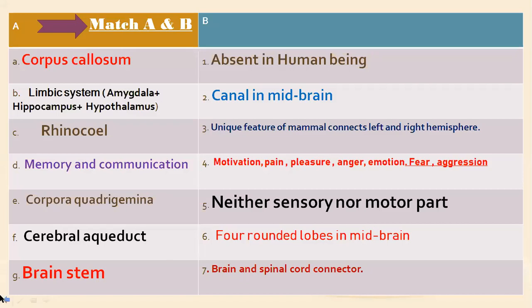Now for the answers: the brain stem is the structure that connects the brain and spinal cord — mainly the midbrain and hindbrain form the junction connecting the spinal cord. The rhinocoel, present in rabbits, is the cavity of the olfactory lobe — olfaction means smelling — and is called the first ventricle or rhinocoel. It is present in lower animals but absent in human beings.